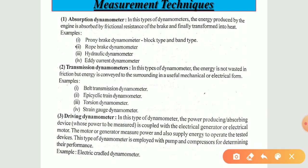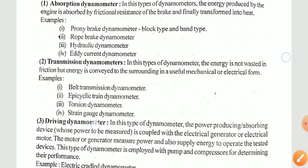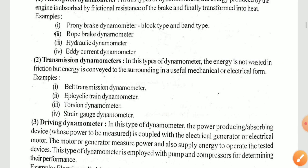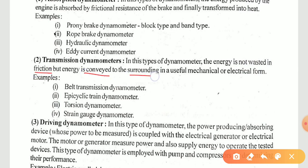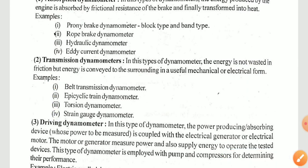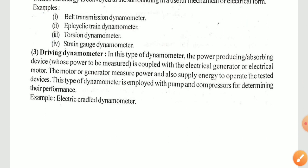The second type is transmission dynamometer. In transmission dynamometer the energy is not wasted in friction but is conveyed to the surroundings and is useful in mechanical or electrical form, such as belt transmission dynamometer, epicyclic train dynamometer, torsion dynamometer, strain gauge dynamometer. The third type is called the driving dynamometer.